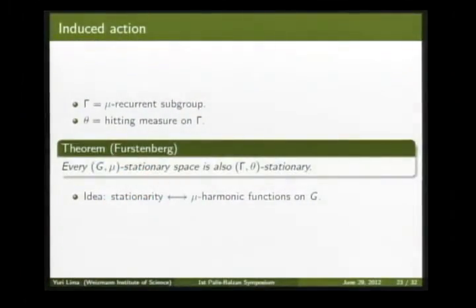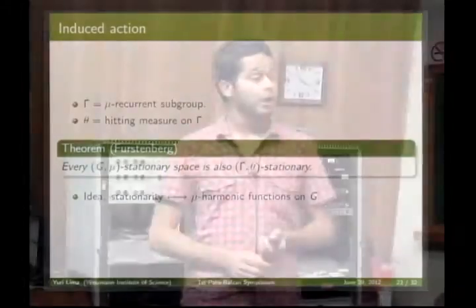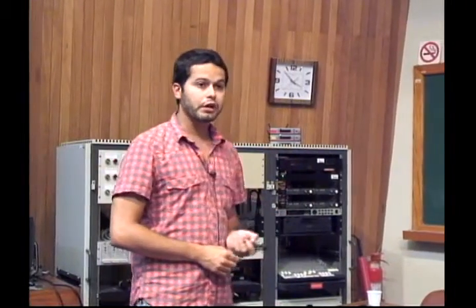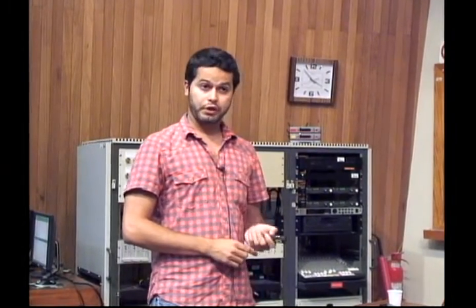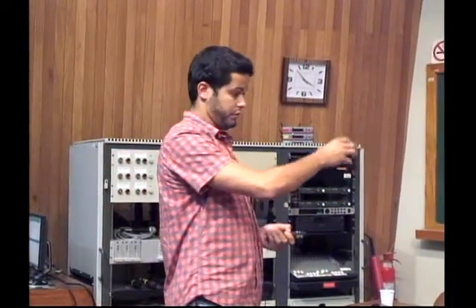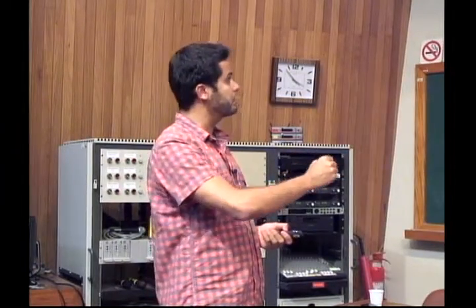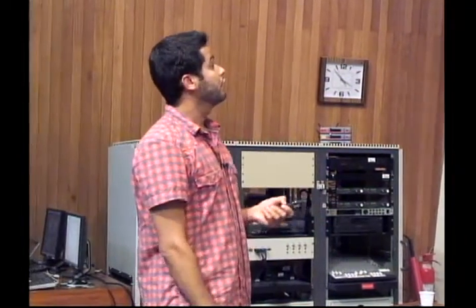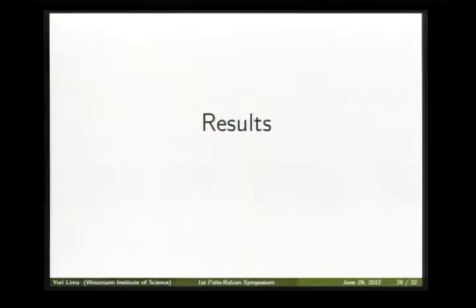A rough reason for this theorem is that stationarity is intimately related to harmonic functions on the group. Whenever you have a recurrent subgroup, the harmonic functions of the recurrent subgroup with respect to the hitting measure are exactly the harmonic functions of the group. Using this relation with stationarity, you can prove this theorem of Furstenberg.